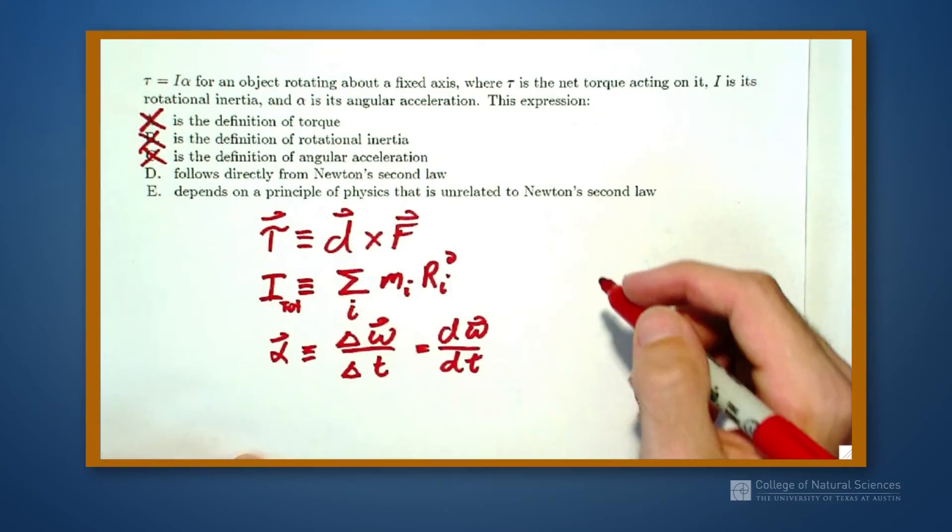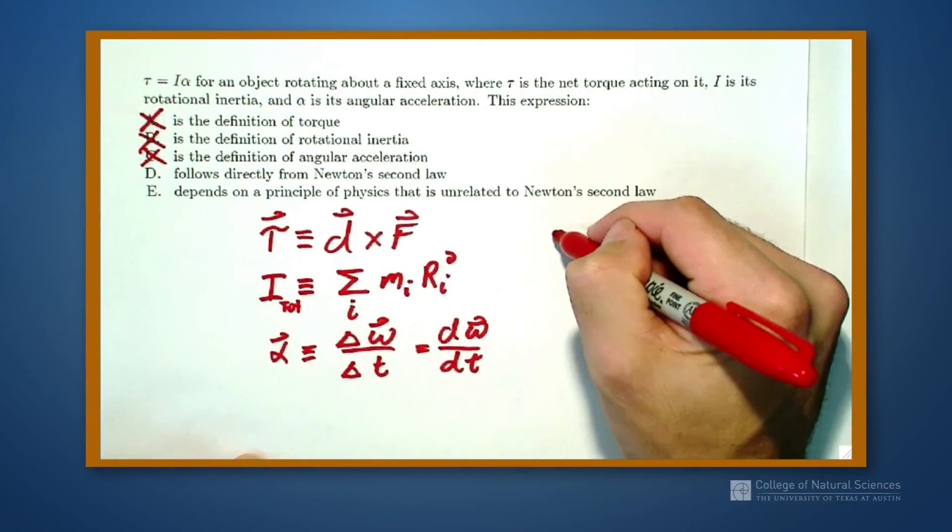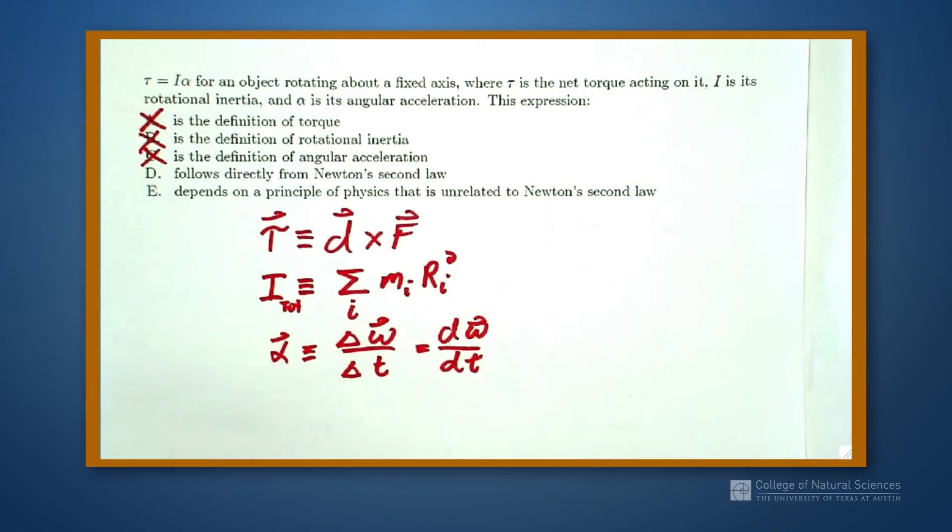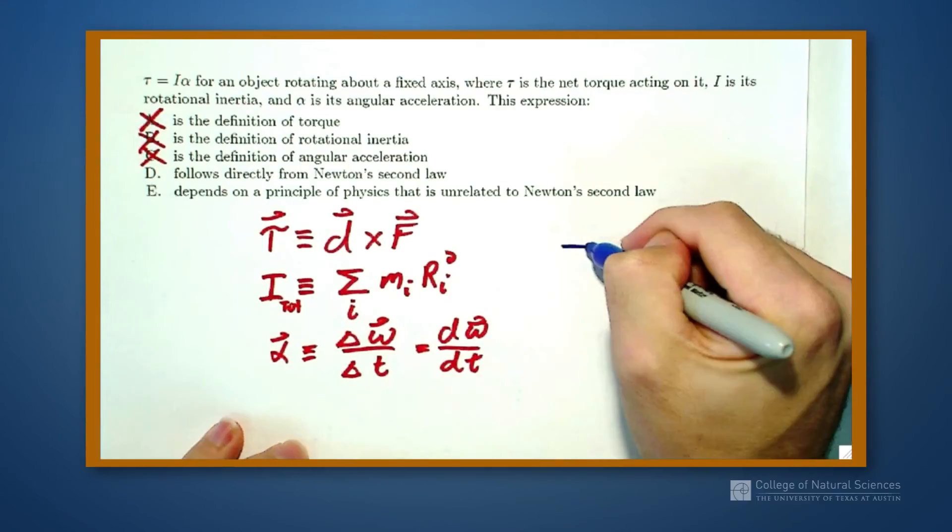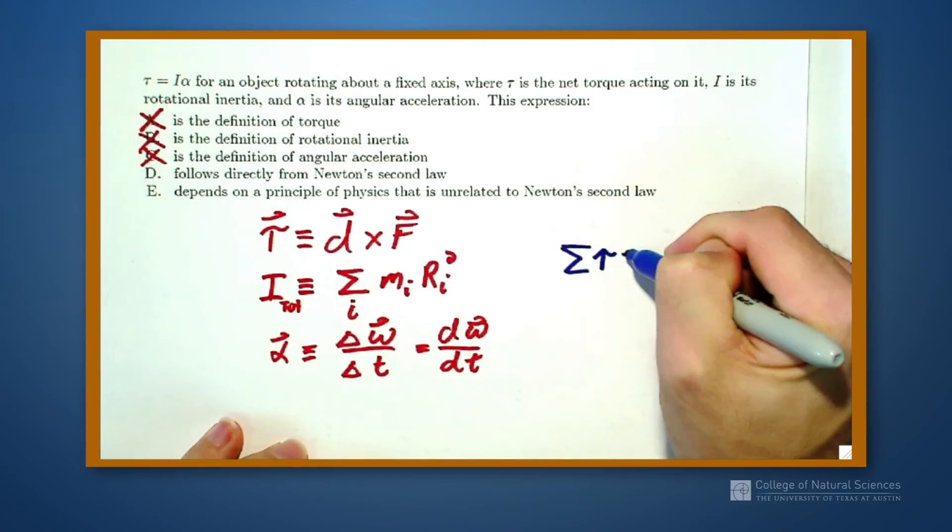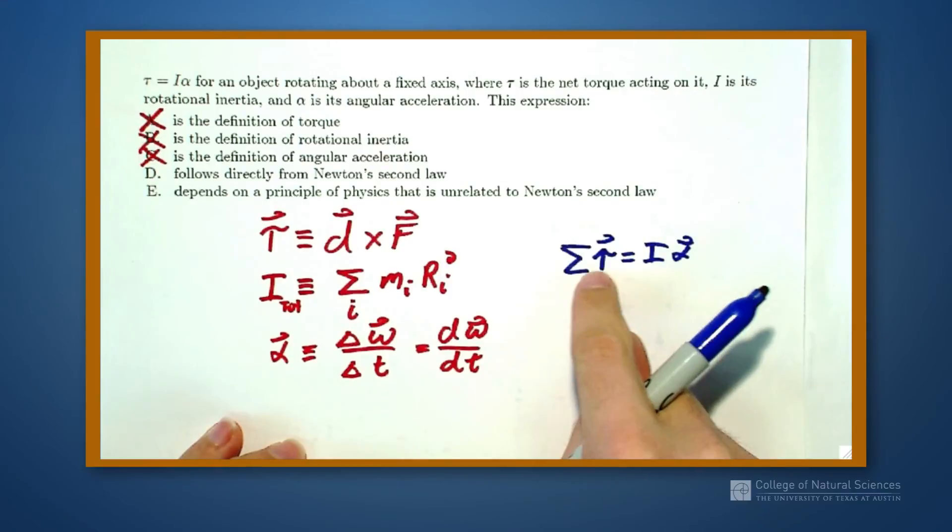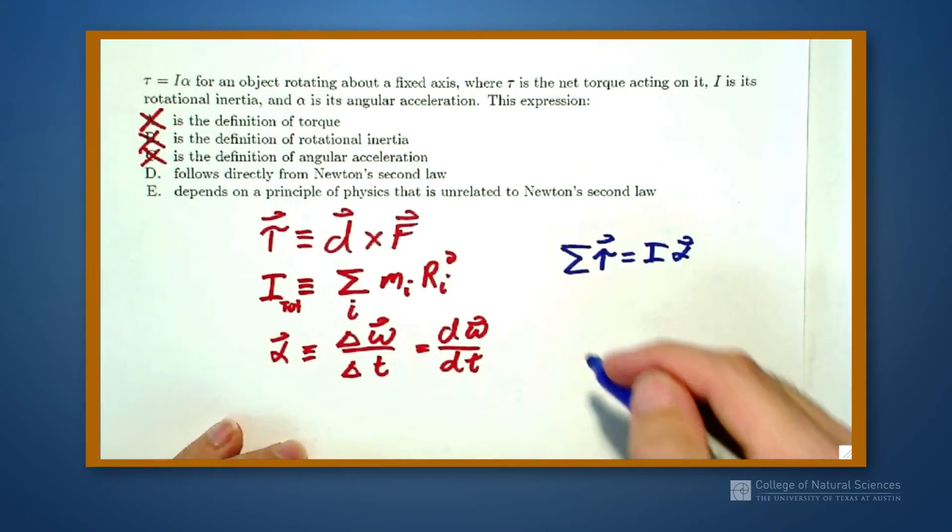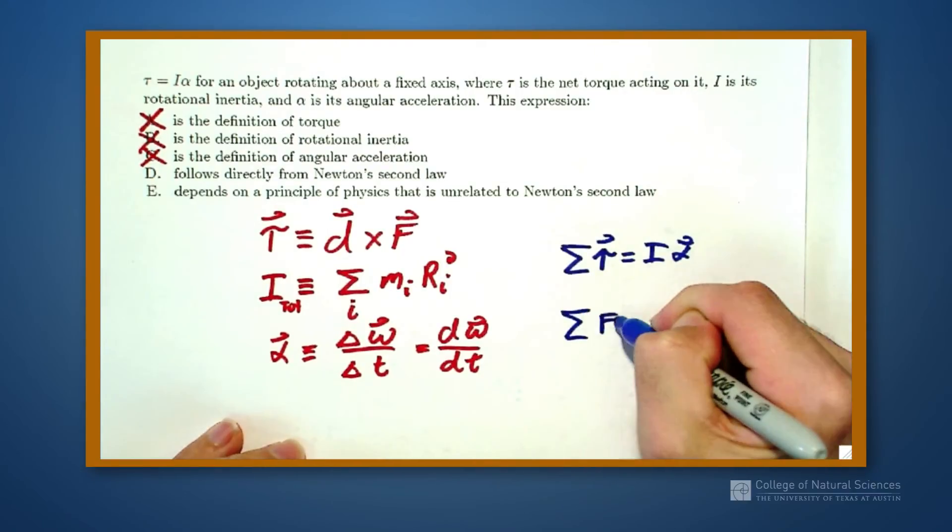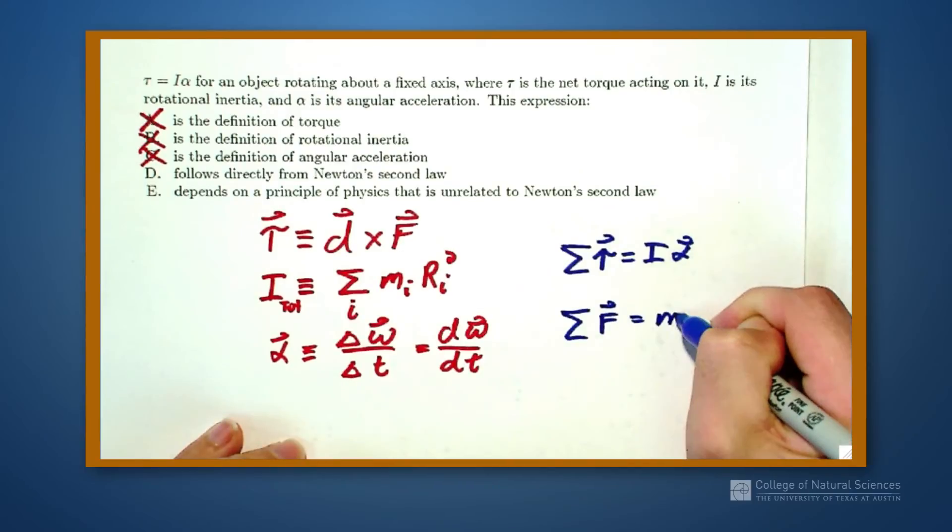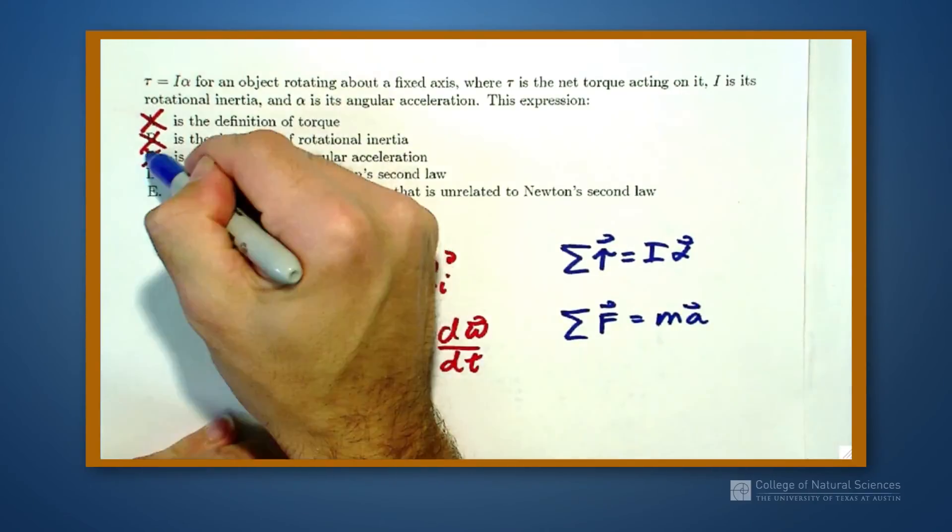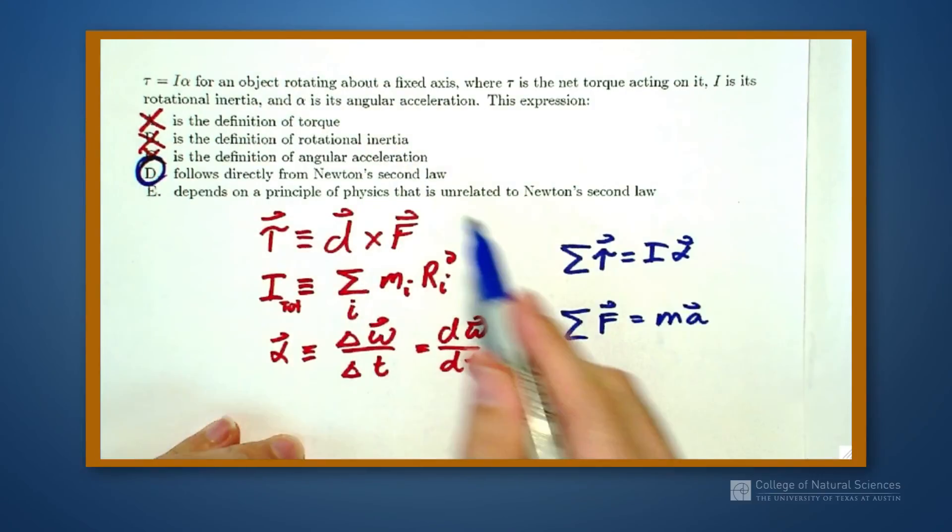Well, I know that this equation, I actually prefer a different equation for this one. I prefer to write it as sigma tau is equal to I alpha. My net torque, I add up all my torques, it gives me I alpha. Well, this looks really similar to MA, F equals MA. So the correct answer is D, we followed directly from Newton's second law.